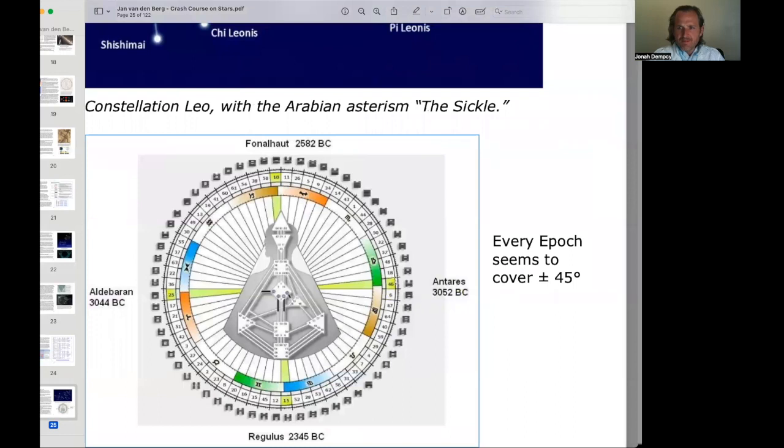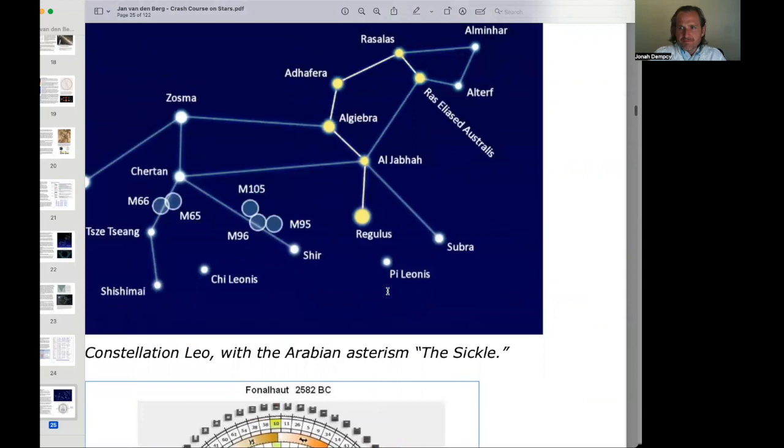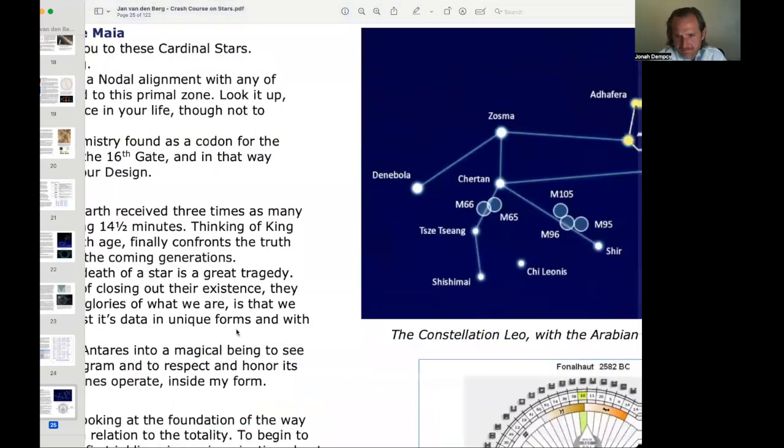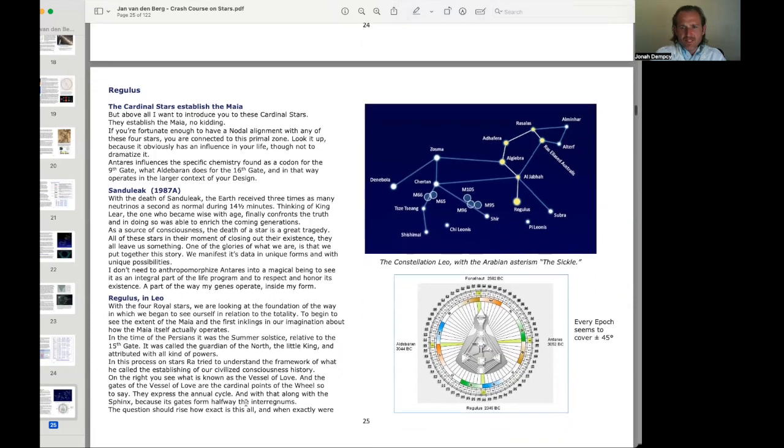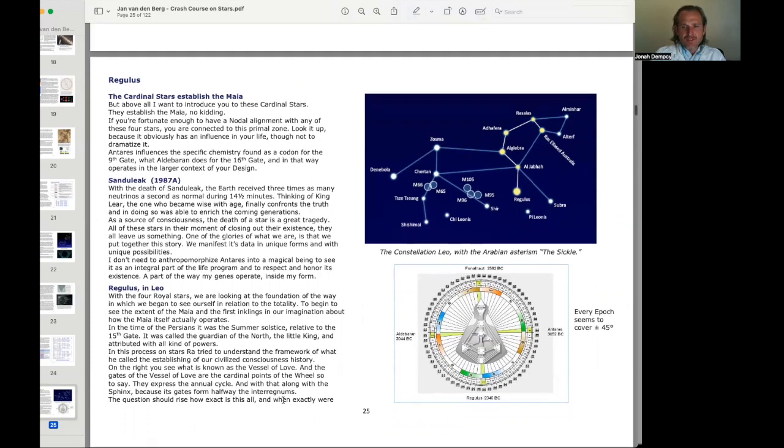And with that, along with the Sphinx, because its gates form halfway, the interregnums. You can see 25, 46, 10, and 15, the vessel of love, and then the interregnums to halfway. Here's 13, 1, 7, and 2 as the halfway points. The vessel of love, the cardinal points of the wheel that express the annual cycle. And then the Sphinx, which are the gates 1, 2, 7, and 13, that are the interregnums.